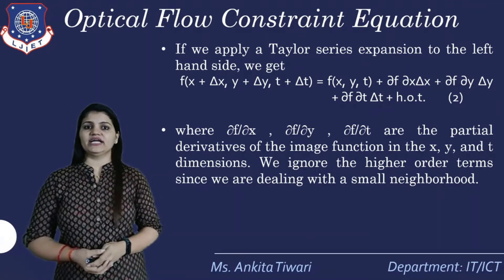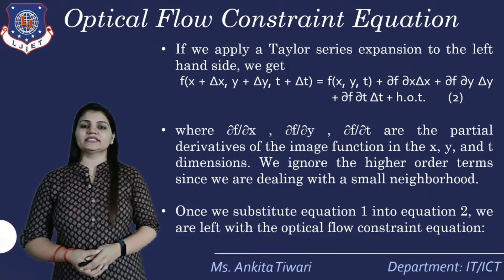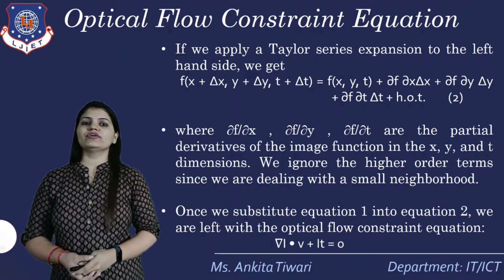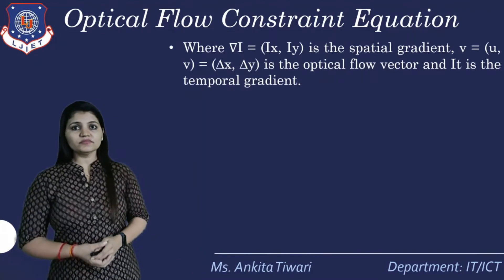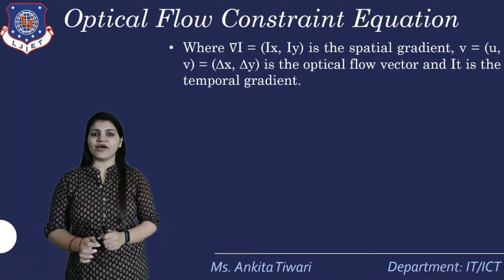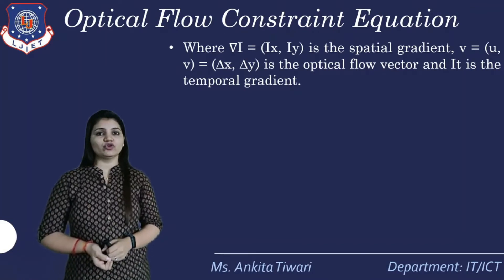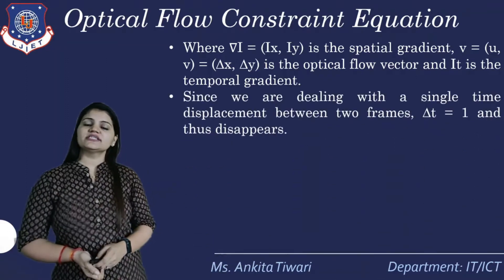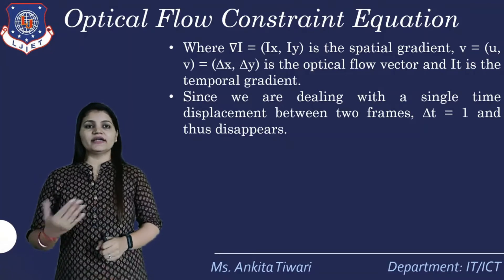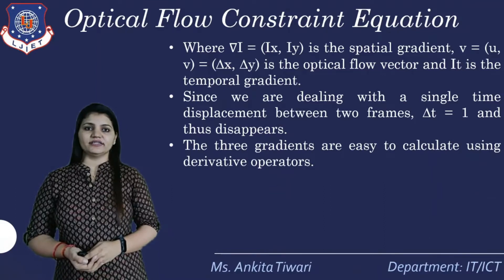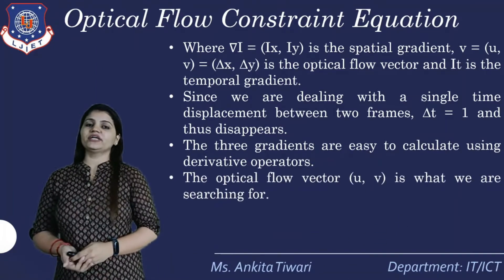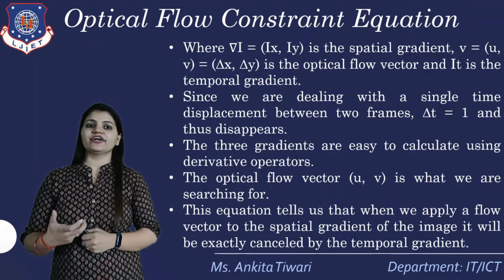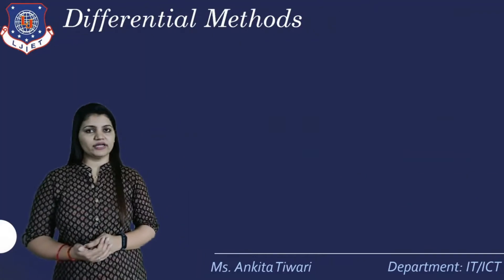We ignore the higher-order terms since we are dealing with a small neighborhood. Once we substitute equation one into equation two, we are left with the optical flow constraint equation: ∇I · v + I_t = 0, where ∇I is the spatial gradient defined by I_x and I_y, v is the optical flow vector (u, v), and I_t is the temporal gradient. The three gradients are easy to calculate using derivative operators, and the flow vector (u, v) is what we are searching for.